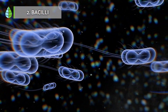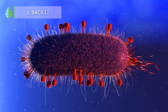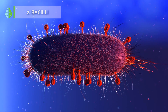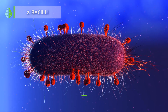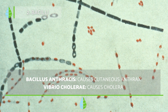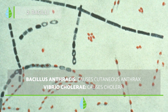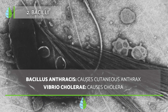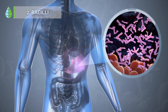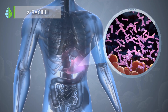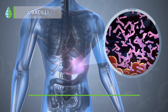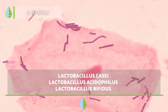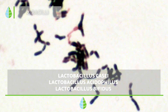Bacilli can have both harmful and beneficial relationships with other organisms. Certain types of Bacillus and related bacteria are responsible for causing diseases — for example, Bacillus anthracis causes cutaneous anthrax, while Vibrio cholerae is responsible for cholera. Among the beneficial bacillus-type bacteria that are part of the natural flora in animals, we can include Lactobacillus casei, Lactobacillus acidophilus, and Lactobacillus bifidus.